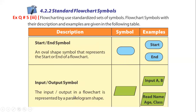Next we have the Input/Output symbol. The input/output in a flowchart is represented by a parallelogram shape. Input represents the raw data provided to the computer to solve a problem. Output is also displayed using the same parallelogram shape. So input and output share the same symbol - the parallelogram represents both input and output.